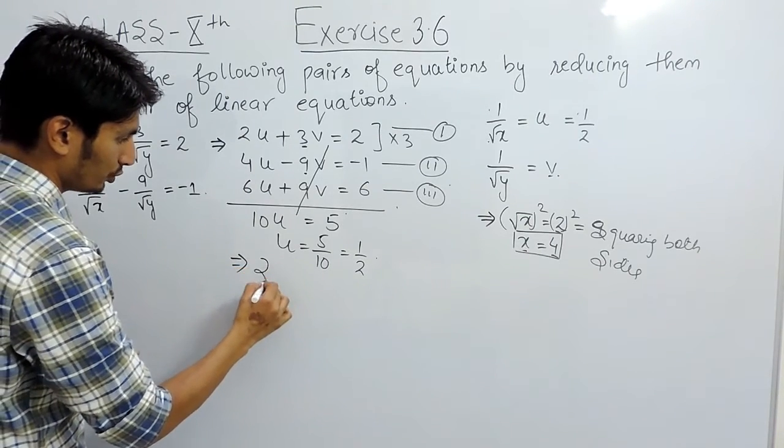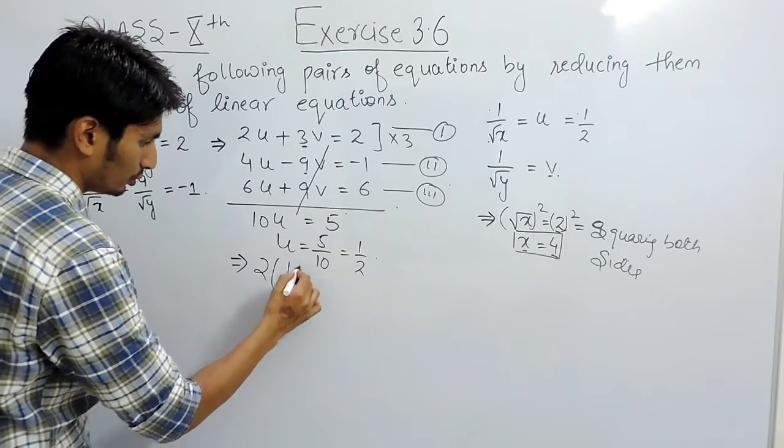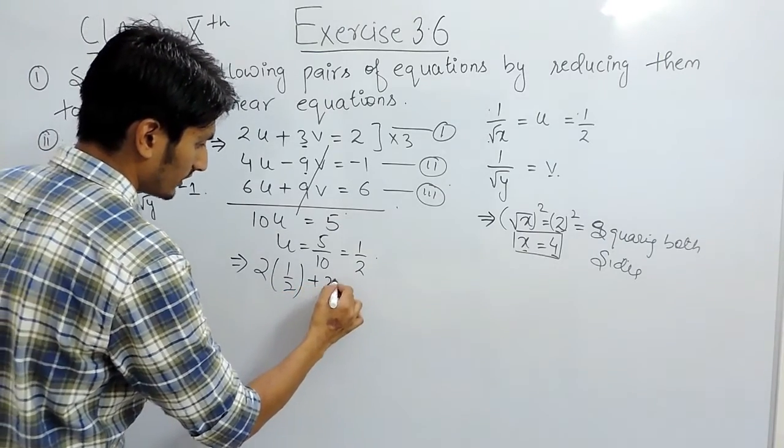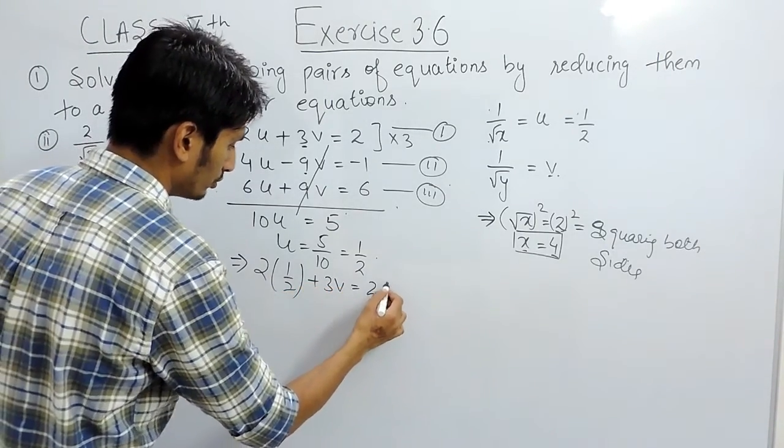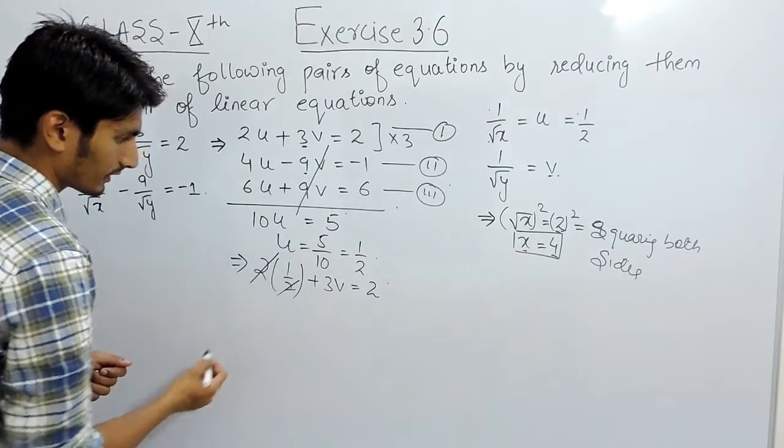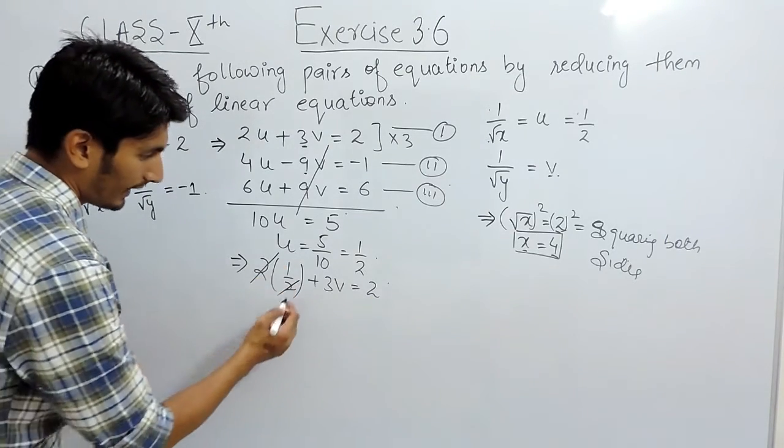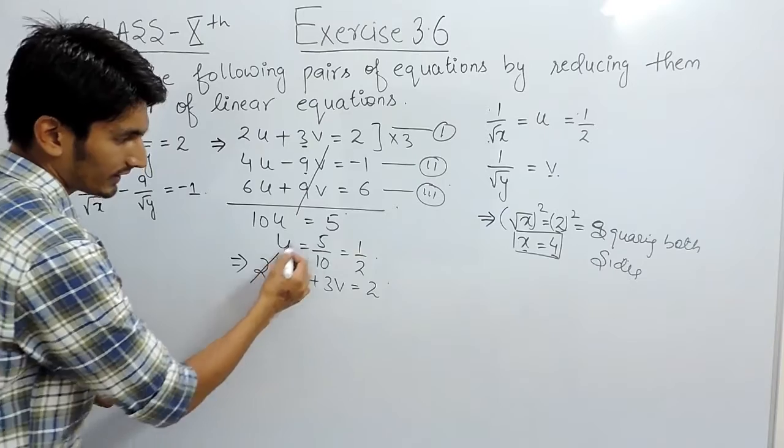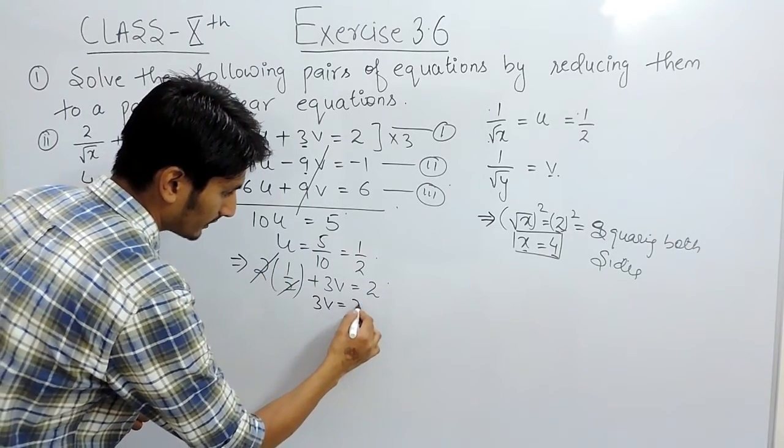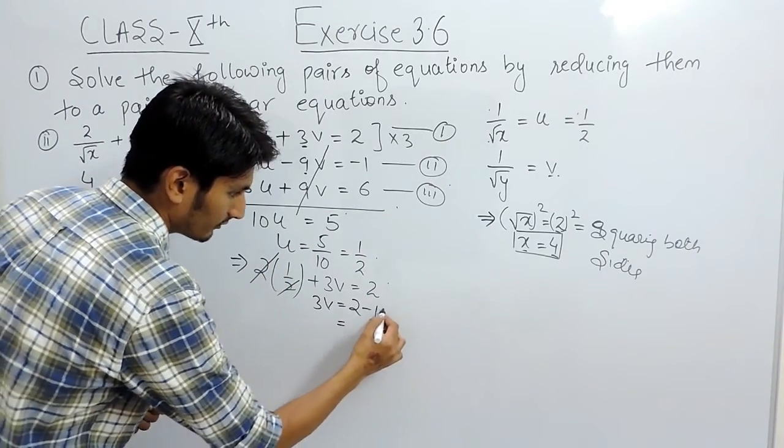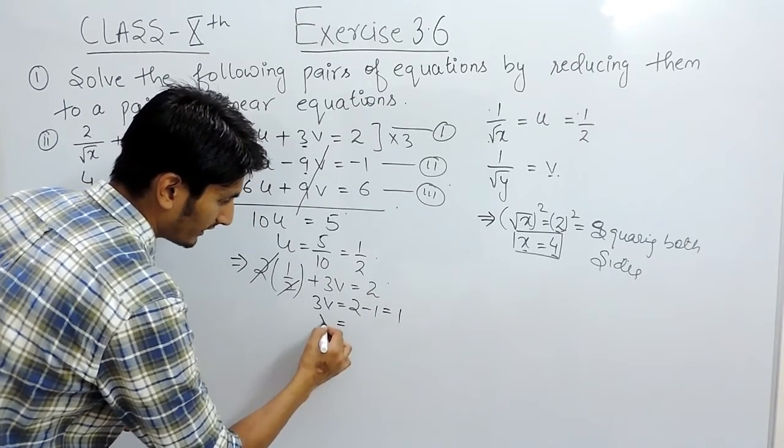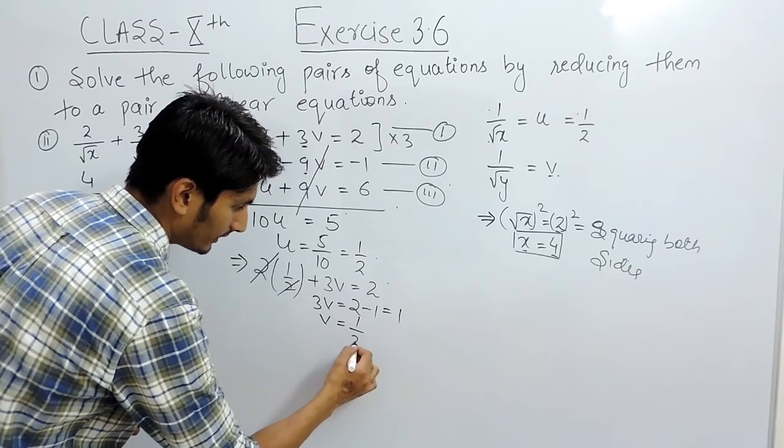So u is basically 1 by 2, this is 3v and this is equals to 2. So this is 1, and this constant when you shift to that side, this will become 2 minus 1 which equals to 1, and the value of v will be equals to 1 by 3.